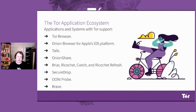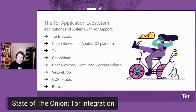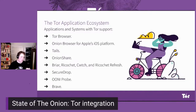If you take a look at what the Tor application ecosystem looks like today, we have the Tor browser, which is a component we're maintaining in the Tor project. We have the Onion browser, which was initiated by Mike Tigas and is now maintained by some folks at the Guardian project. We have Tails OS, Onion Share, Briar, Ricochet, Cooch, Ricochet Refresh, SecureDrop, Uni, and Brave.